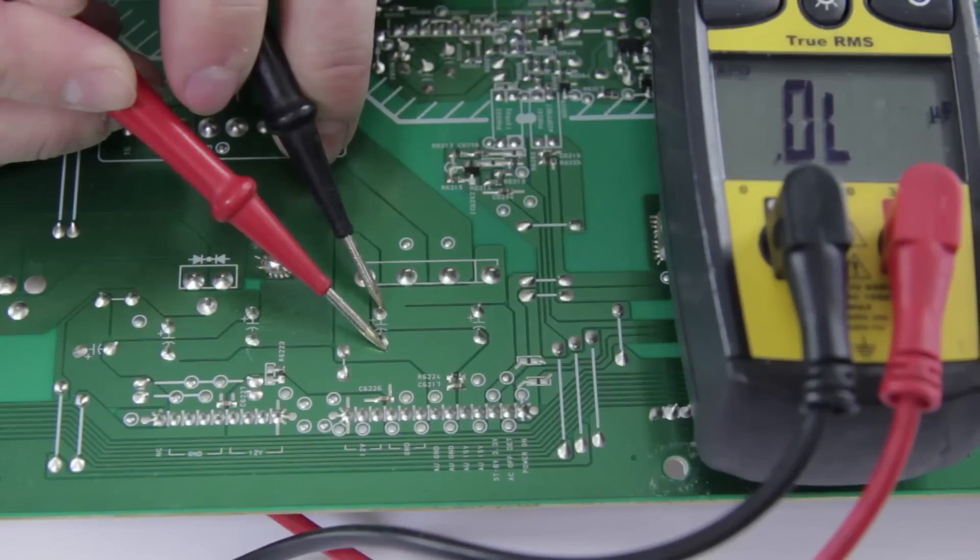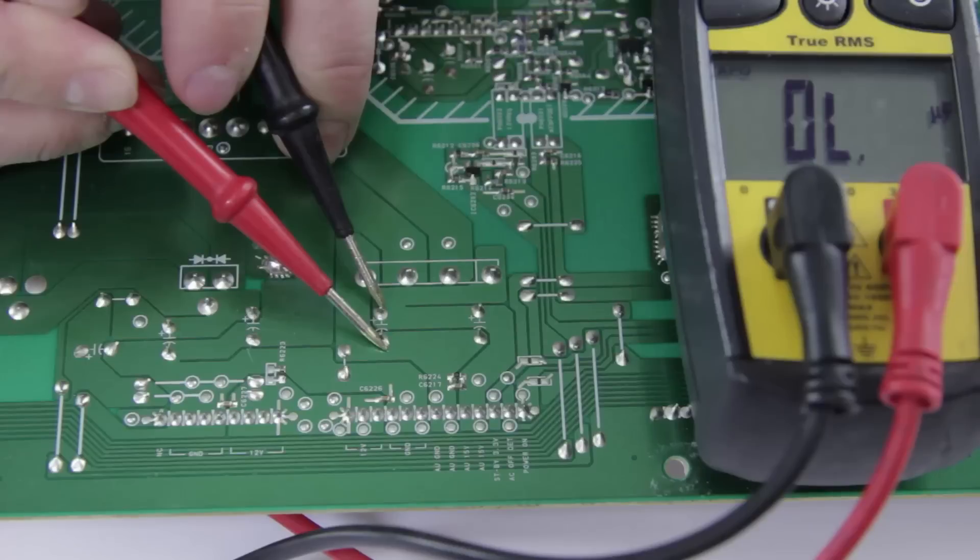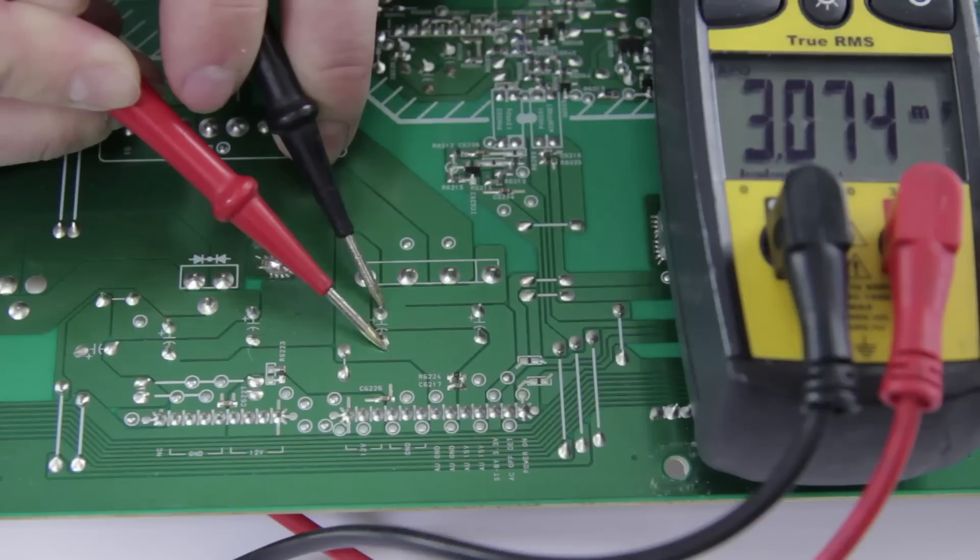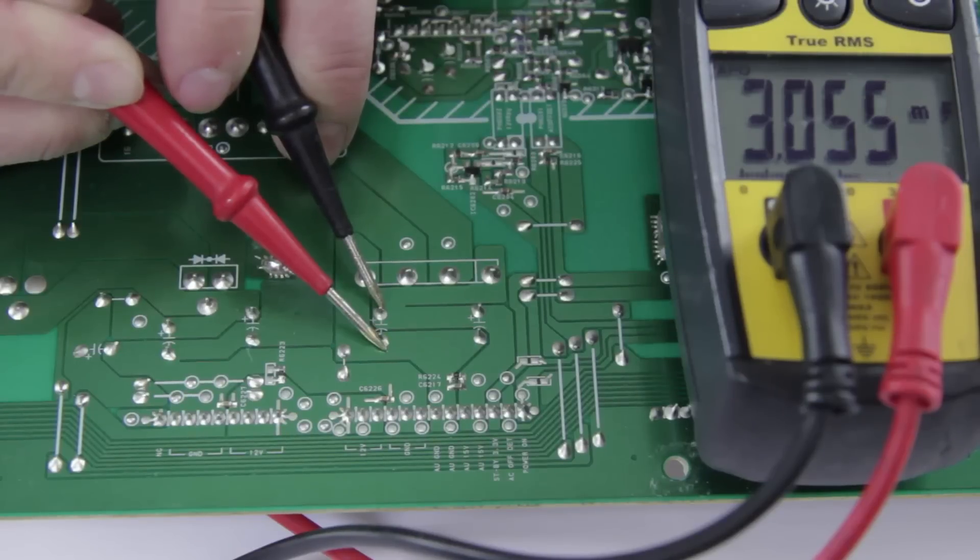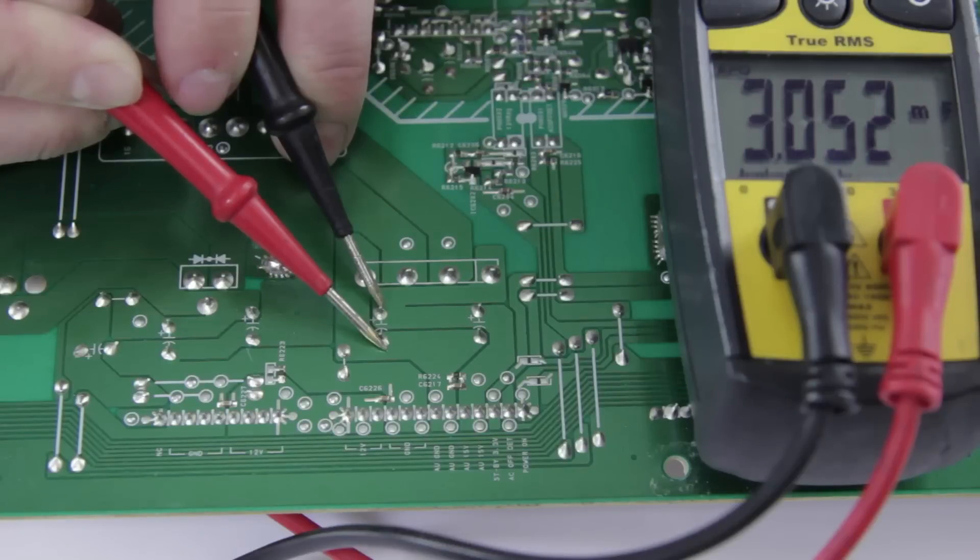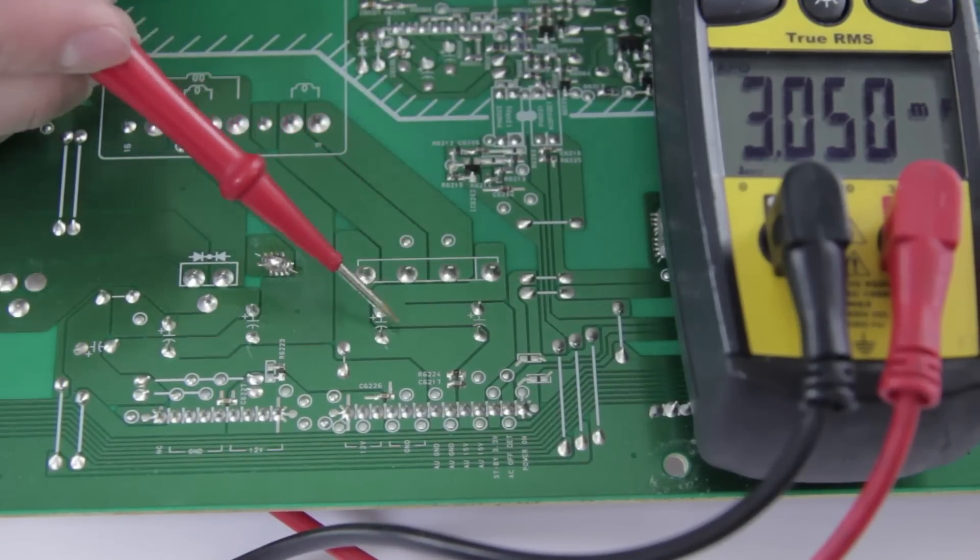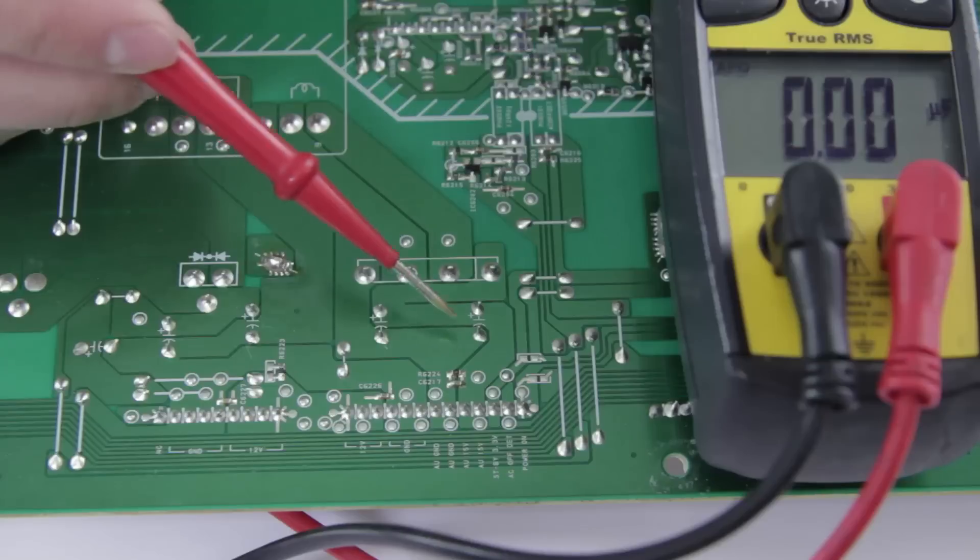And it will auto range and go through. And it should give us the value. And it's coming up at about 3 millifarads which is 3000 microfarads. And we know from turning the board over that this cap should be 1500 microfarads.